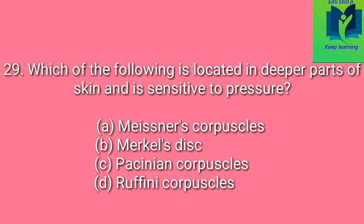Which of the following is located in deeper parts of skin and is sensitive to pressure? Option A: Meissner's corpuscles. Option B: Merkel's disc. Option C: Pacinian corpuscles. Option D: Ruffini corpuscles.